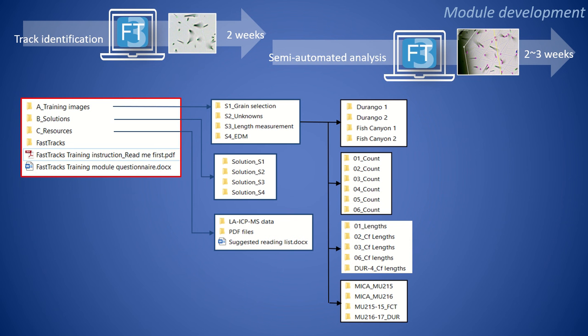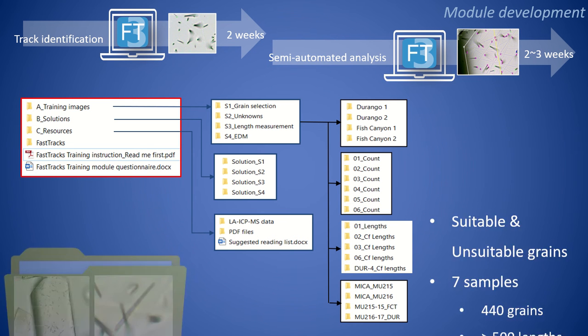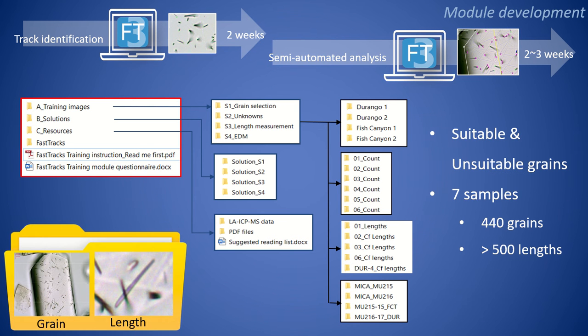By including a mixture of captured images of suitable and unsuitable grains, grain selections can be executed even without access to a microscope or sample mount. This package is stored in a cloud platform for easy access worldwide and is ready for distribution.